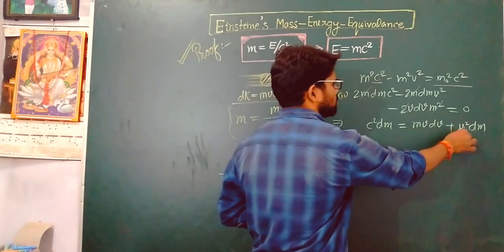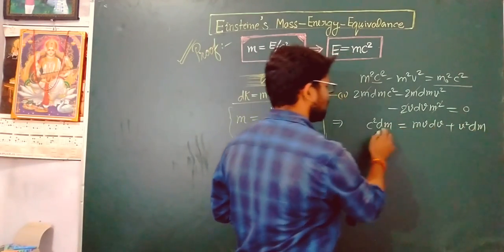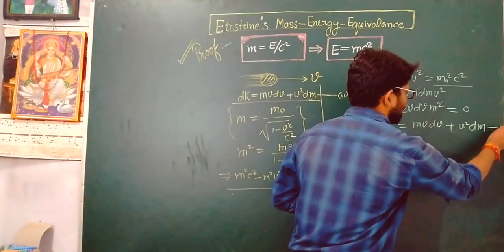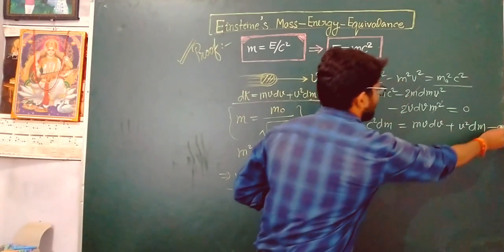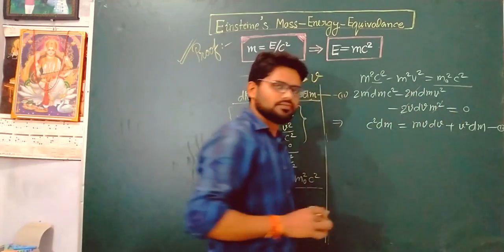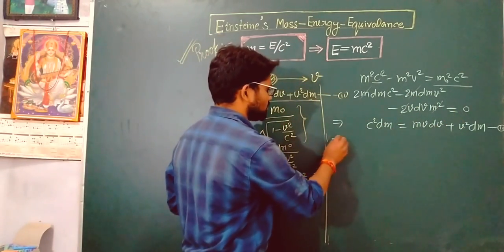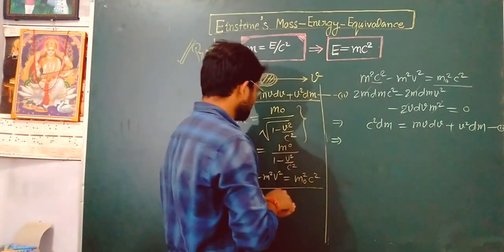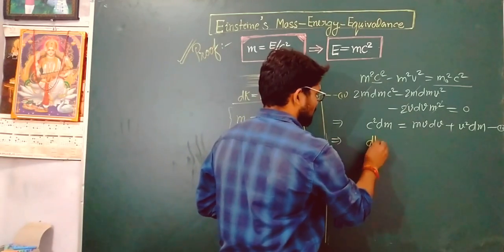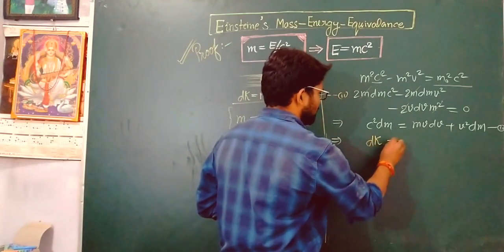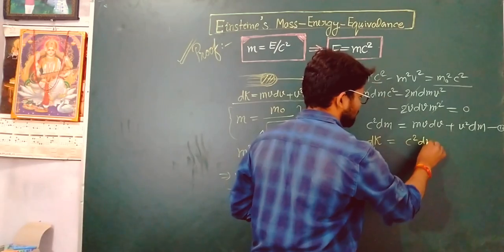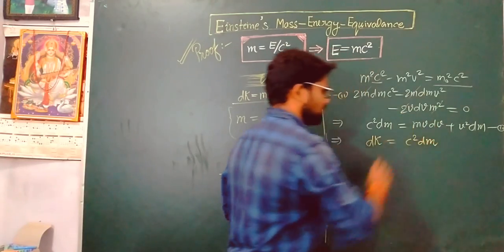Comparing this result — mv·dv plus v²·dm equals c²·dm — with relation number two, we find that dK equals c²·dm.